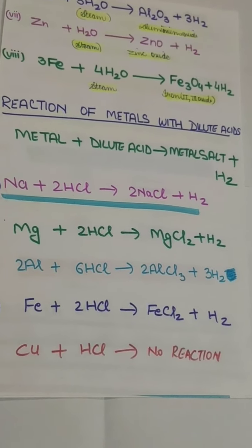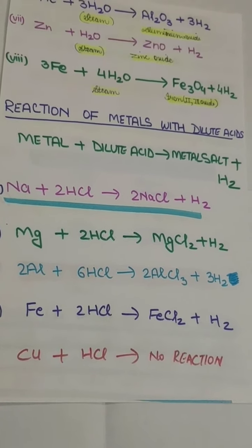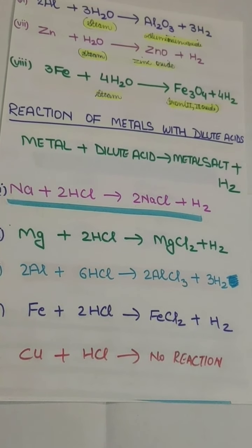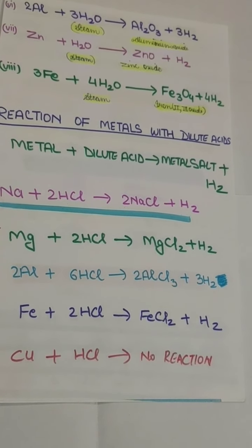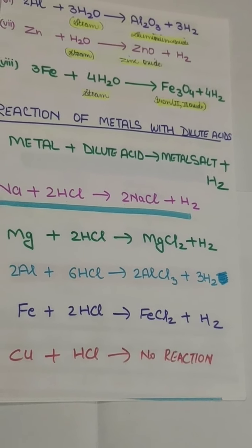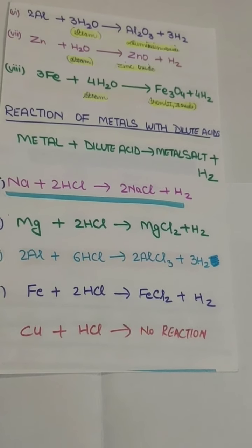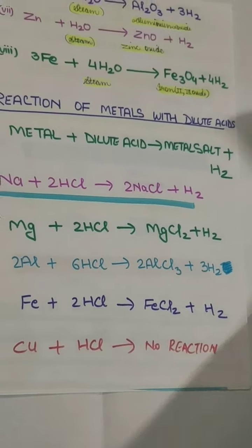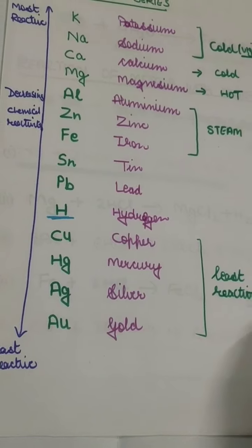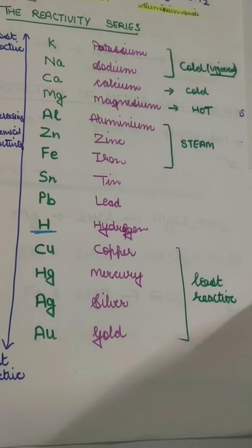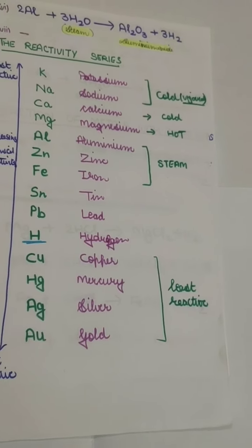Iron reacts with hydrochloric acid to form FeCl₂ (ferrous chloride) and hydrogen gas. Copper reacts with HCl and we get nothing — copper is very least reactive and won't react with acids, so there is no reaction. Keep in mind that metals below hydrogen in the reactivity series are very least reactive and won't react with anything. Reactions occur only with metals in the upper part of the reactivity series.